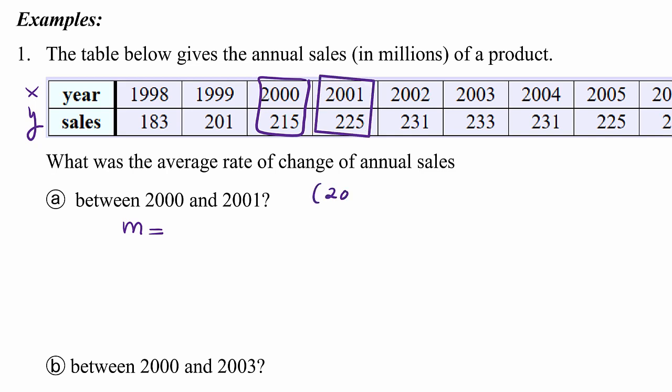Let me rewrite them here: 2000, 215, and then 2001, 225, and that's our x1, y1, and our x2, y2. We'll compute the slope between those two points, so you know that that's the difference of the y's over the difference of the x's, and that gives us 10 over 1.